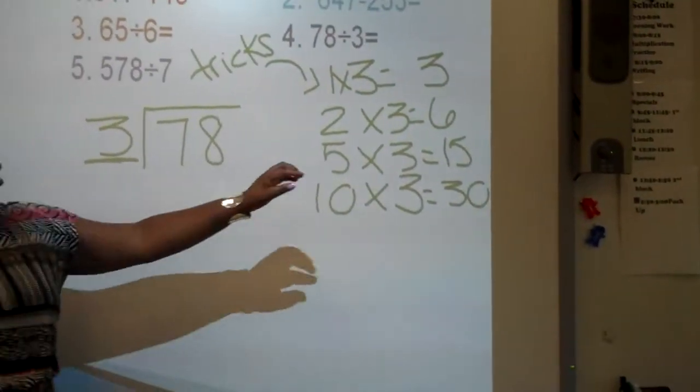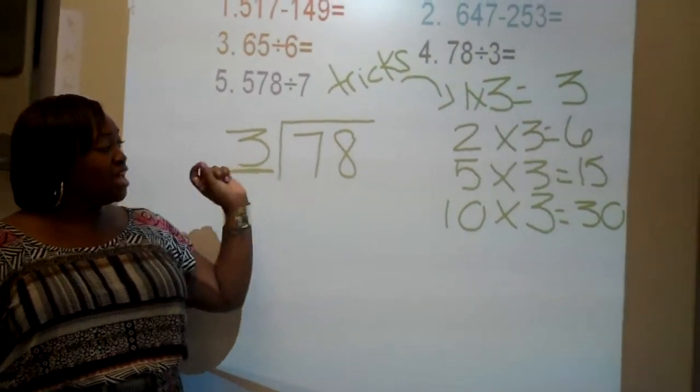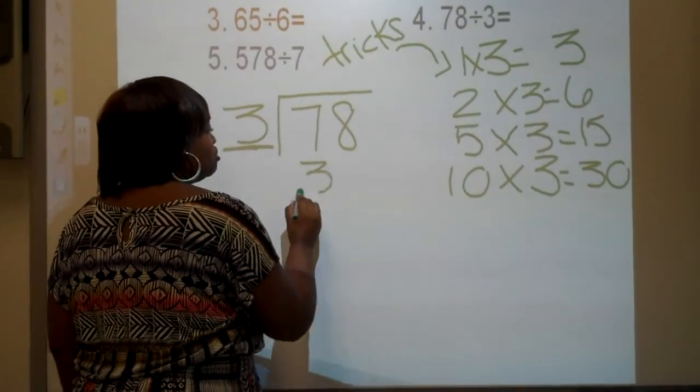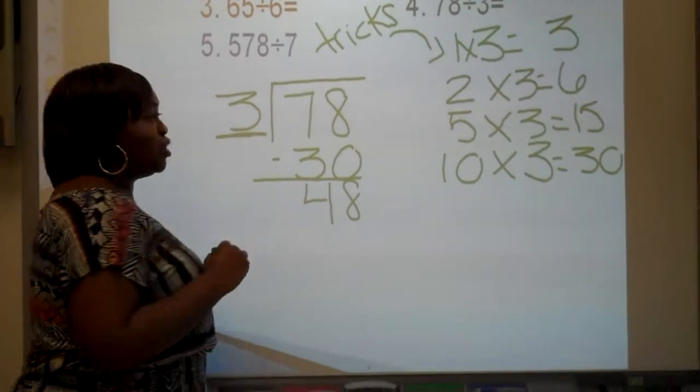So what I do is I start at my bottom. I look at my dividend and I say, can I take 30 away from 78? Can I do it? Yes! So I'm going to subtract 30, and I'm left with 48.